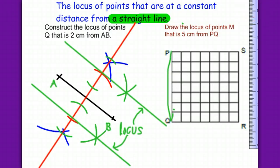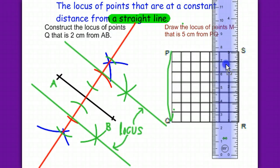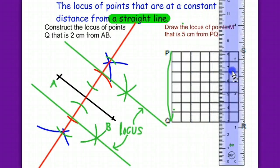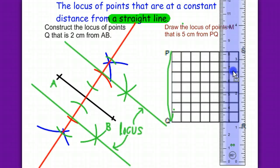Bring in the ruler and put it, 1, 2, 3, 4, 5. 5cm from PQ. And this is our locus.